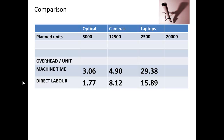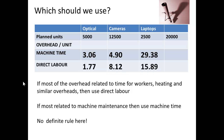To compare: allocating on the basis of machine time gives each optical unit £3.06, whereas direct labour gives only £1.77. For cameras, machine time gives £4.90 but direct labour gives £8.12 per unit. Which should we use? We would look at whether the overheads really relate to worker time — such as heating — in which case we'd use direct labour. If most of the overhead relates to machine maintenance, we'd use machine time. There isn't a definite rule; you have to look at what makes up that overhead.